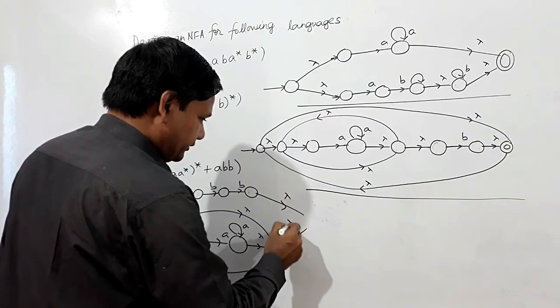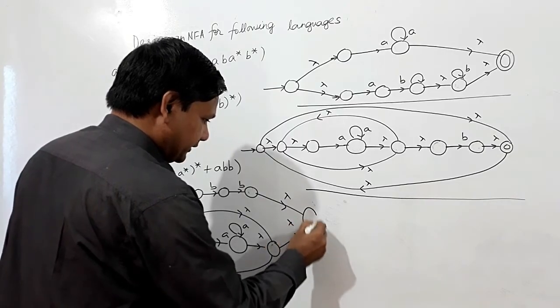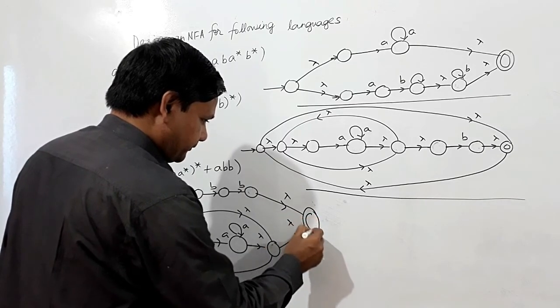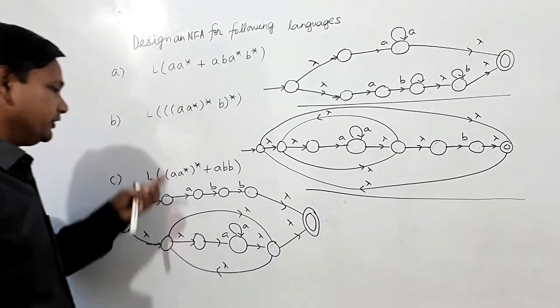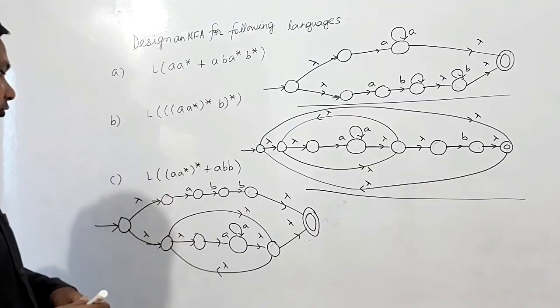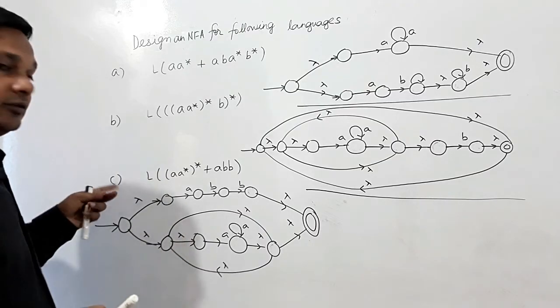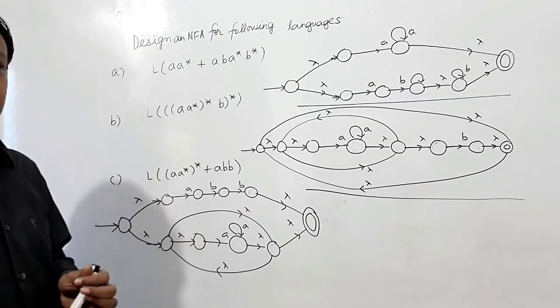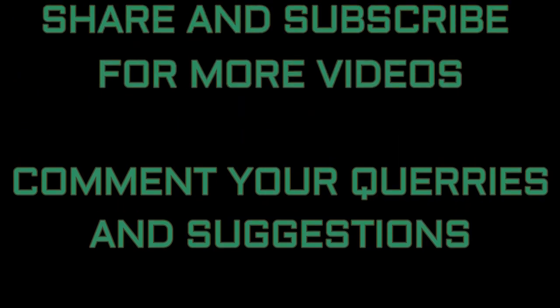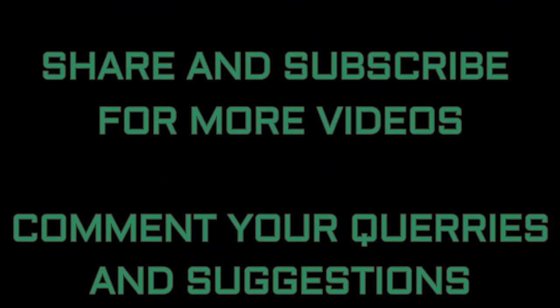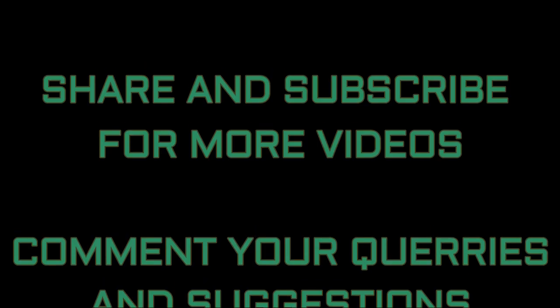I will also make a lambda transition from the final states to make a new final state. So this is the NFA for part C — I have to make a new final state, and I will make a new final state.